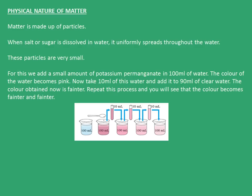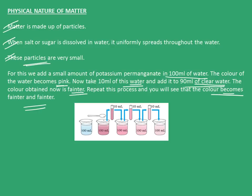The first topic of this chapter is Physical Nature of Matter. Matter is made up of particles. When salt or sugar is dissolved in water, it uniformly spreads throughout the water, showing these particles are very small. To prove this, we add a small amount of potassium permanganate in 100 ml of water and the color becomes pink. Taking 10 ml of this water and adding it to 90 ml of clean water, the color becomes fainter. Repeating this process, the color becomes fainter and fainter, showing the particles were uniformly spread throughout the water.